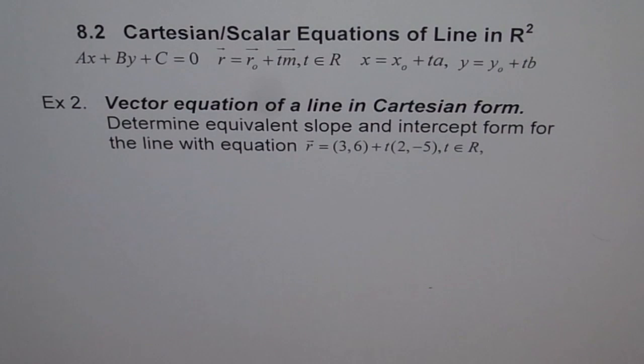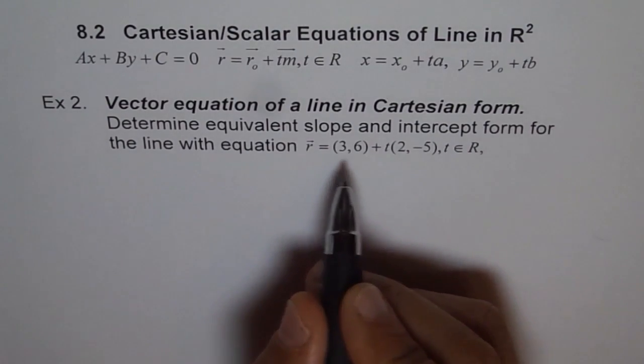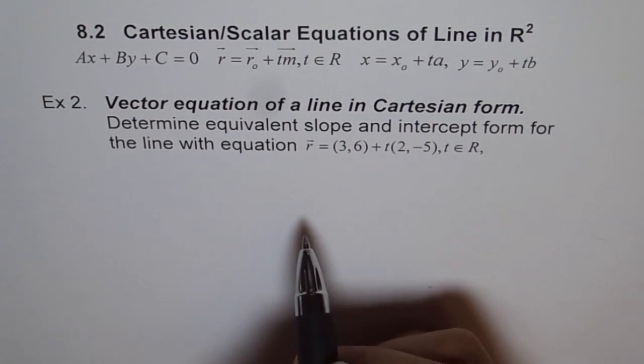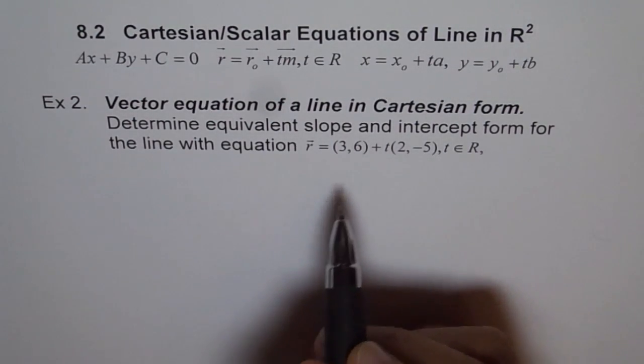Determine equivalent slope and intercept form for the line with equation R equals (3,6) plus t(2,-5) where t belongs to real numbers. Now we have a vector equation here and we need to convert this to slope and intercept form. Now how should we do it?